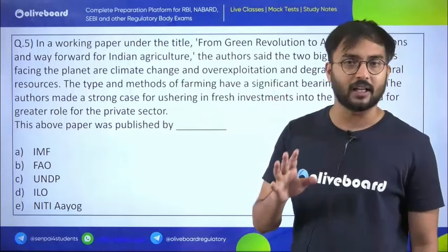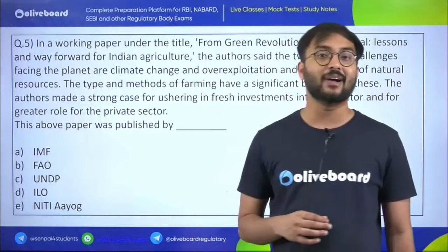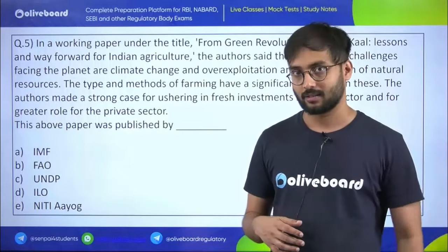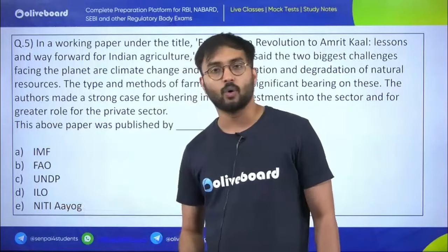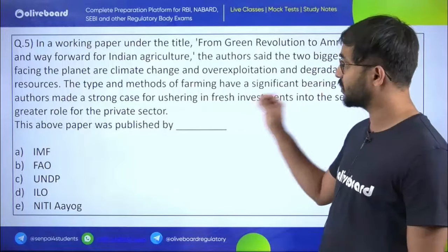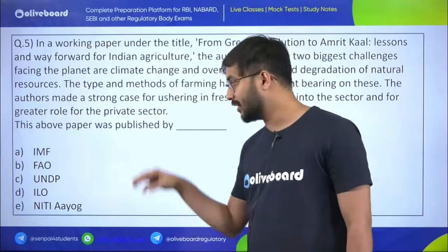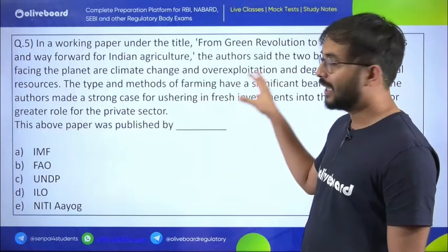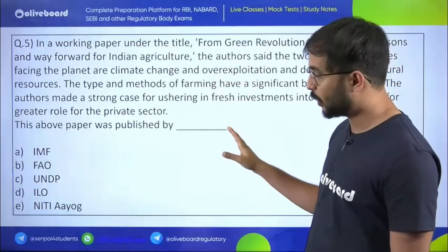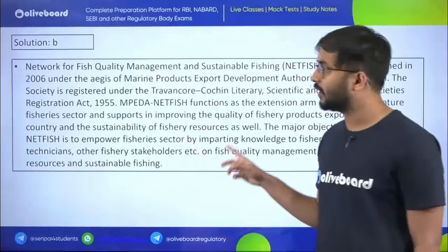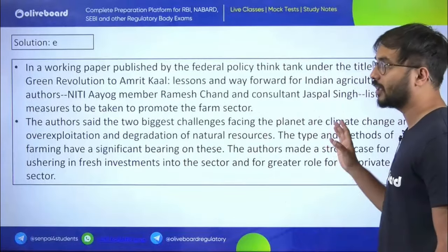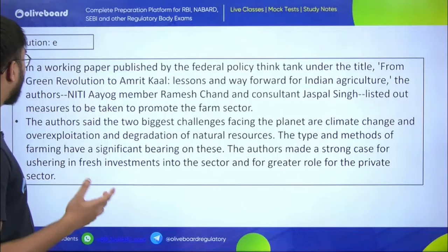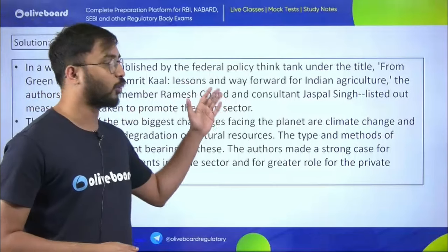Using logic: UNDP focuses on developmental spheres in developed and developing countries, not agriculture specifically — eliminate. ILO is a labour organization — eliminate. FAO is possible, but IMF is less likely for an India-specific paper. The answer is NITI Aayog — this working paper was published by India's federal policy think tank NITI Aayog, titled 'From Green Revolution to Amrit Kaal: Lessons and Way Forward for Indian Agriculture.'